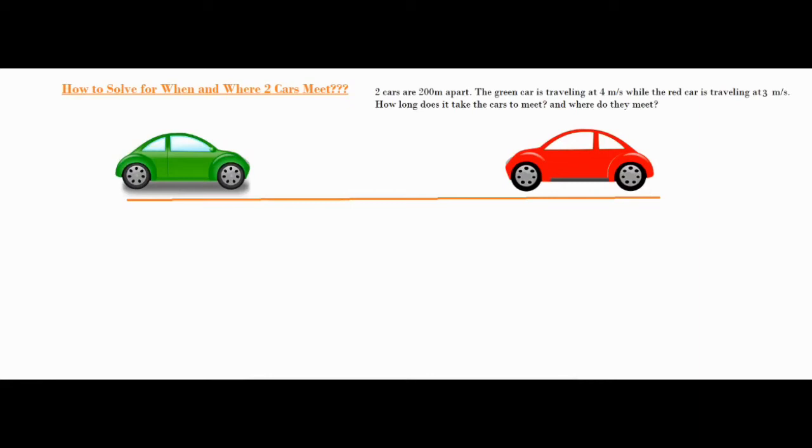In this video we're going to be talking about how to solve for when and where two cars meet. We have two cars that are 200 meters apart. A green car is going at four meters per second while the red car is traveling at three meters per second in the other direction towards that green car. How long does it take for the cars to meet and where do they meet?